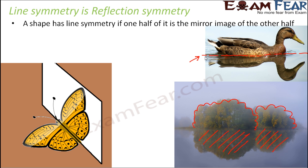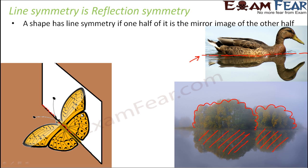Let's take the example of the butterfly. Take a picture of a butterfly on a sheet of paper, draw the line of symmetry, and fold it — you see that the two halves exactly overlap each other, which proves that the vertical line is the line of symmetry. Now place a mirror exactly along the line of symmetry and observe the mirror image. You would see that the mirror image of one half of the butterfly is exactly identical to the other half, showing that the line of symmetry divides the entire object into two equal halves that are mirror images of each other.